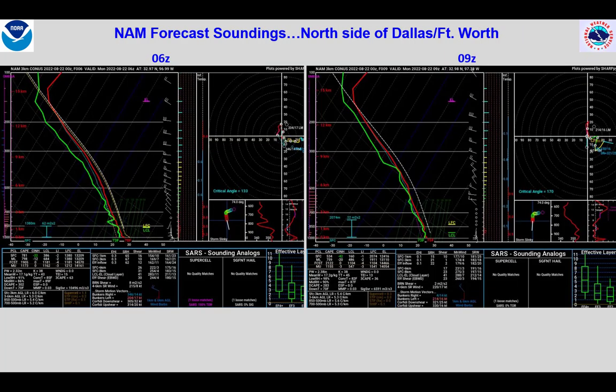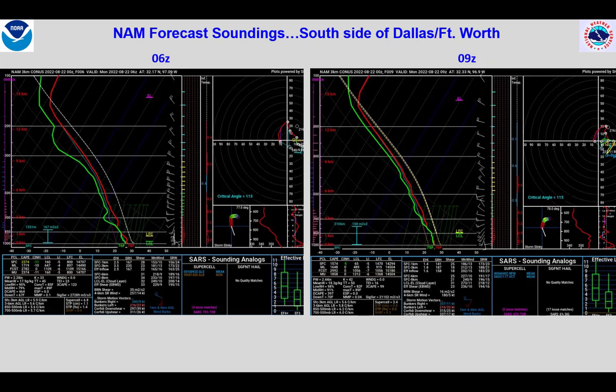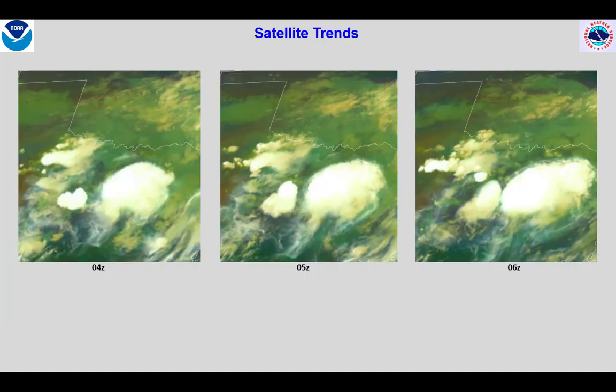Let's take a look at some NAM forecast soundings at 6Z and 9Z around the Dallas-Fort Worth area. For the north side, we see similar conditions favoring heavy rainfall, including deep moisture, high precipitable water values, sufficient instability, and weak storm steering flow. For the south side of Dallas-Fort Worth at 6Z and 9Z, somewhat stronger low-level winds compared to the north side, suggesting low-level convergence and lift. Hourly satellite images through 6Z show continued redevelopment of convection on the western side of the cluster, highlighting the excessive rainfall event ongoing.